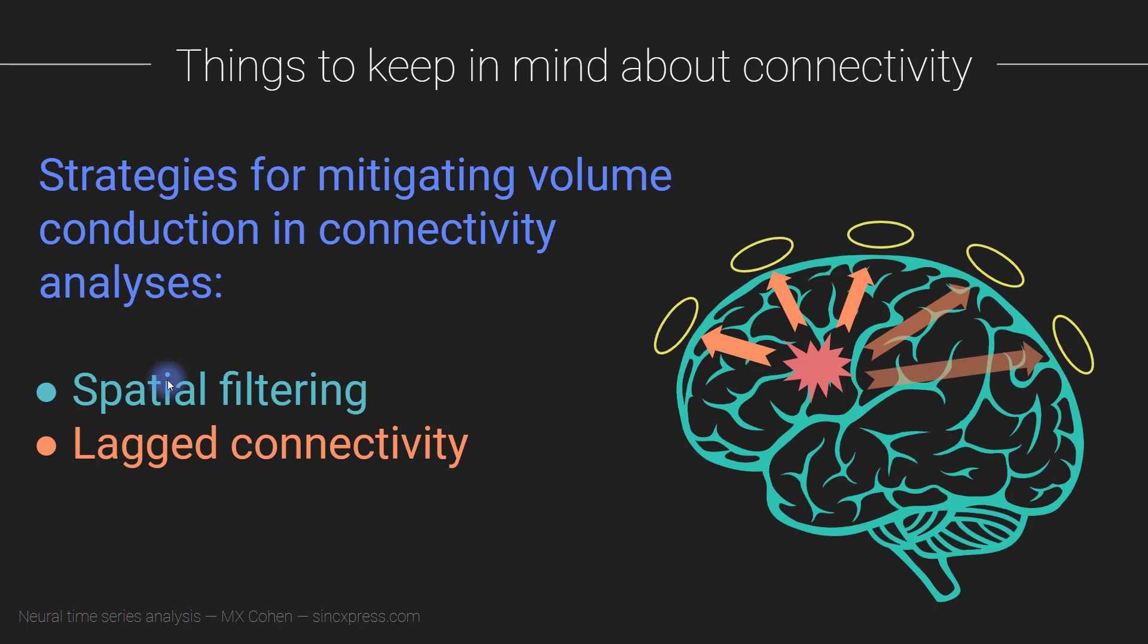One family of strategy involves spatial filtering, and this is something that you do to your data, an operation that you apply to the data before you do your connectivity analyses. Another family of strategies is applying some lagged connectivity measure or lagged synchronization-based measure. This stuff I'm going to talk about, these lagged connectivity measures, I will talk about more in later videos. In this video, I'm going to talk about spatial filtering.